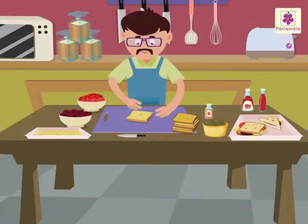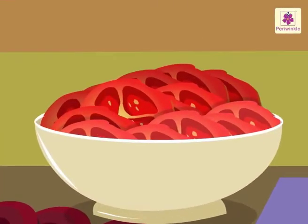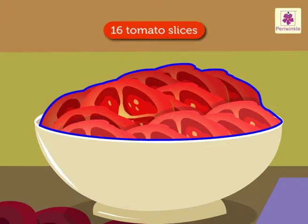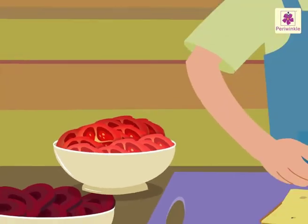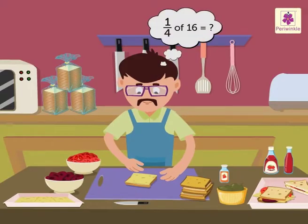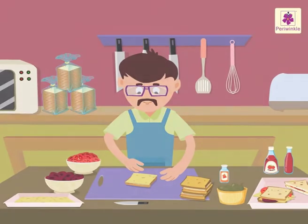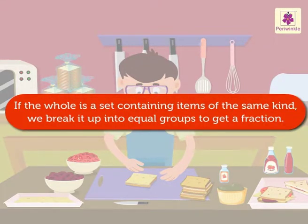Now he wants to put tomato slices in the sandwich. He has 16 tomato slices, but he wants to put only 1 fourth of the tomato slices in the sandwich. If the whole is a set containing items of the same kind, we can break it up into equal groups to get a fraction.